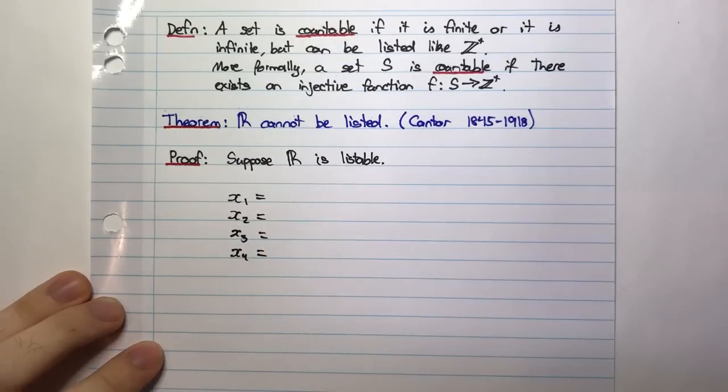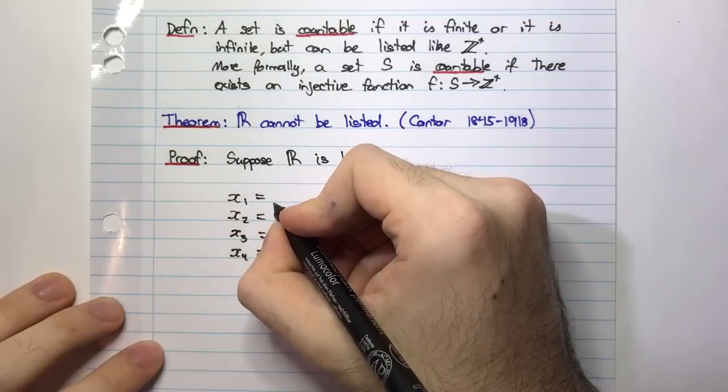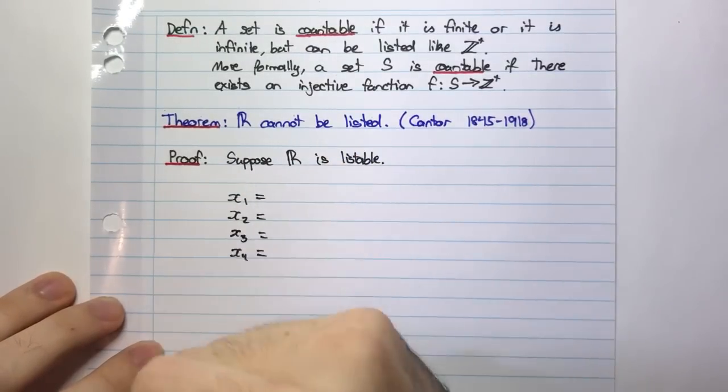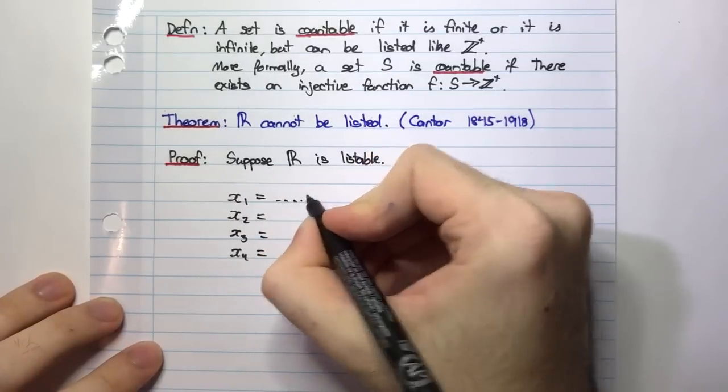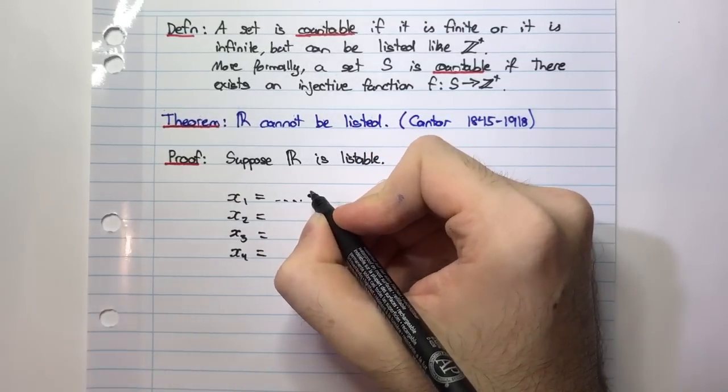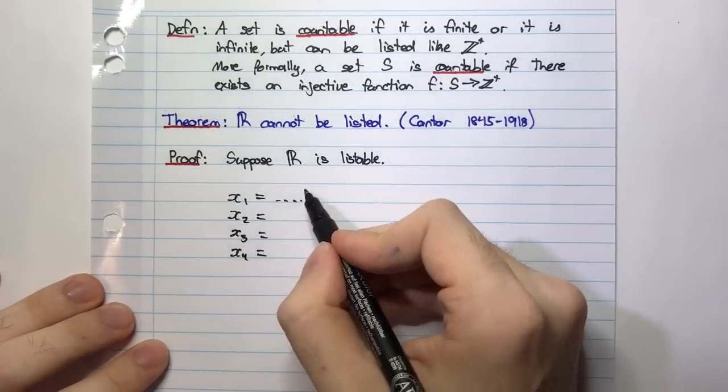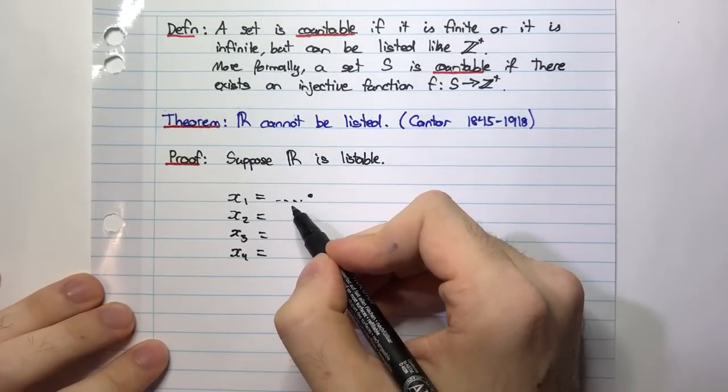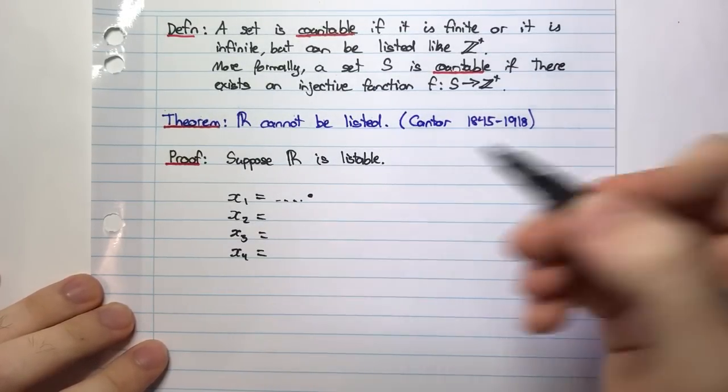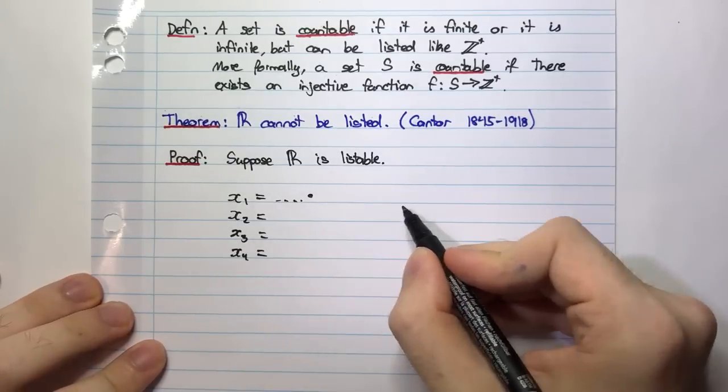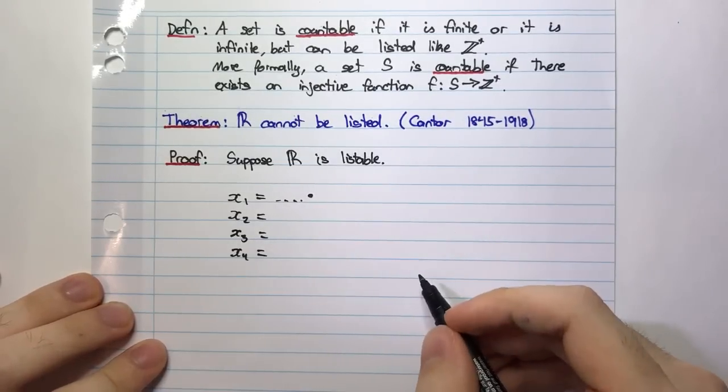Now I'm going to write my real numbers as a decimal expansion. I'm really not interested in the integer parts of my real numbers, I'm only interested in what comes after the decimal point. So here we have just some integer, could be positive, could be negative, doesn't really matter, could even be zero. But I don't really care about that, I'm only interested in what comes after that.